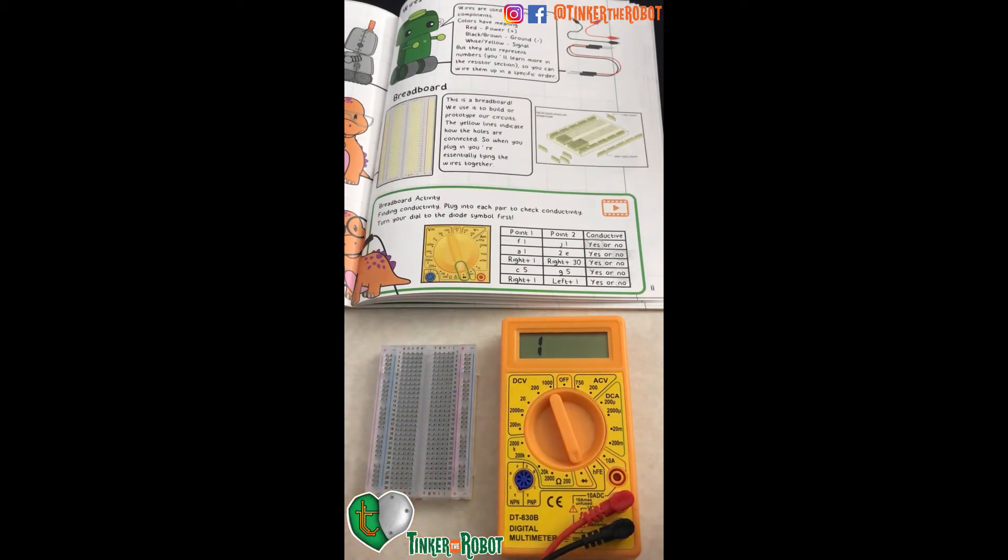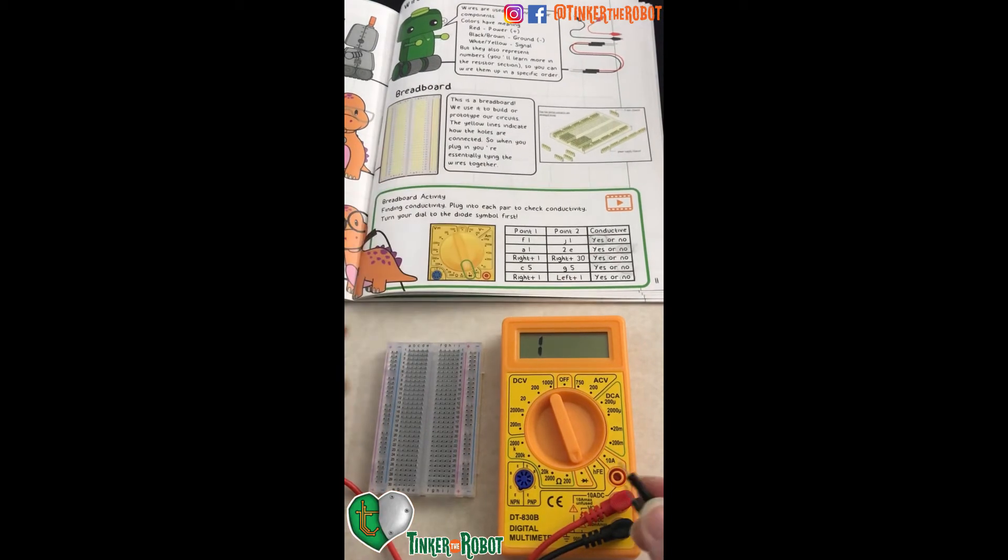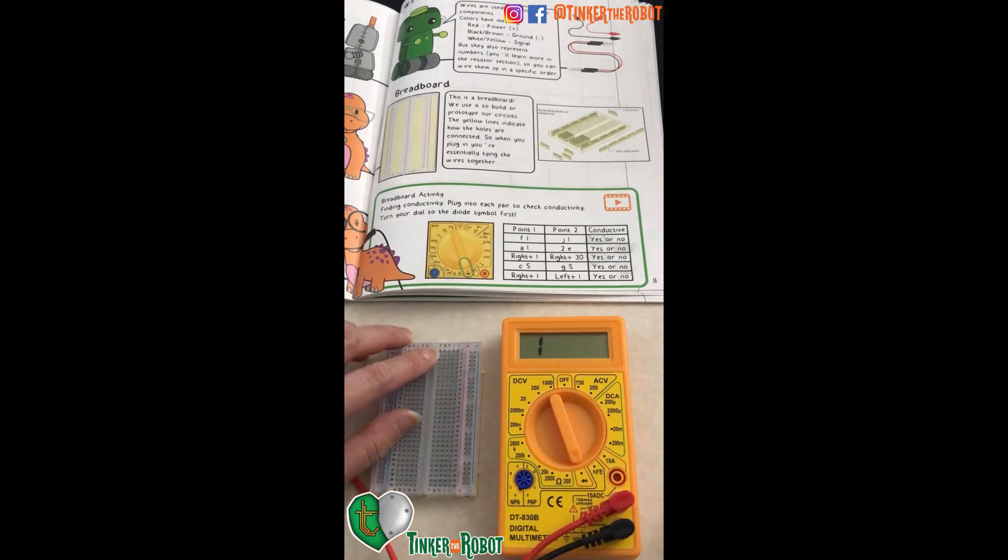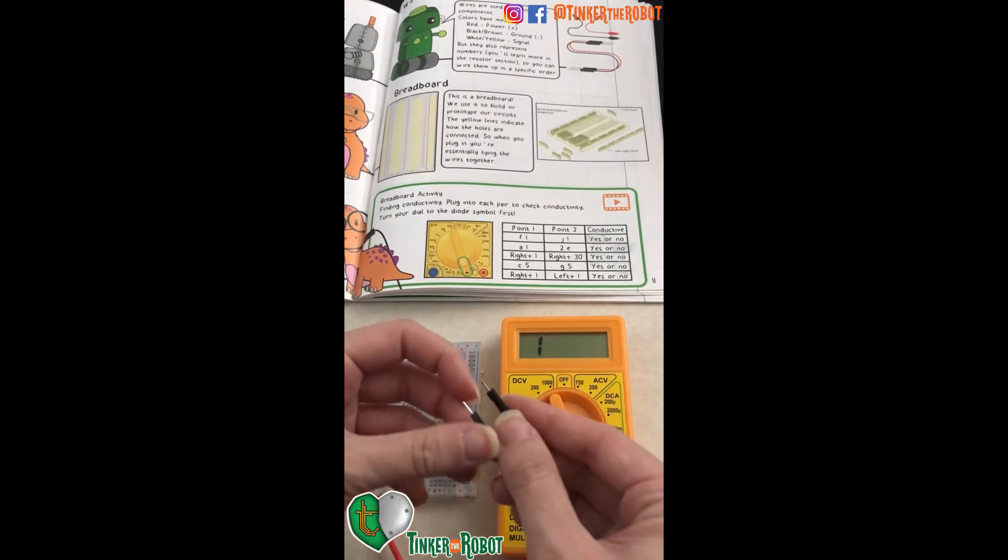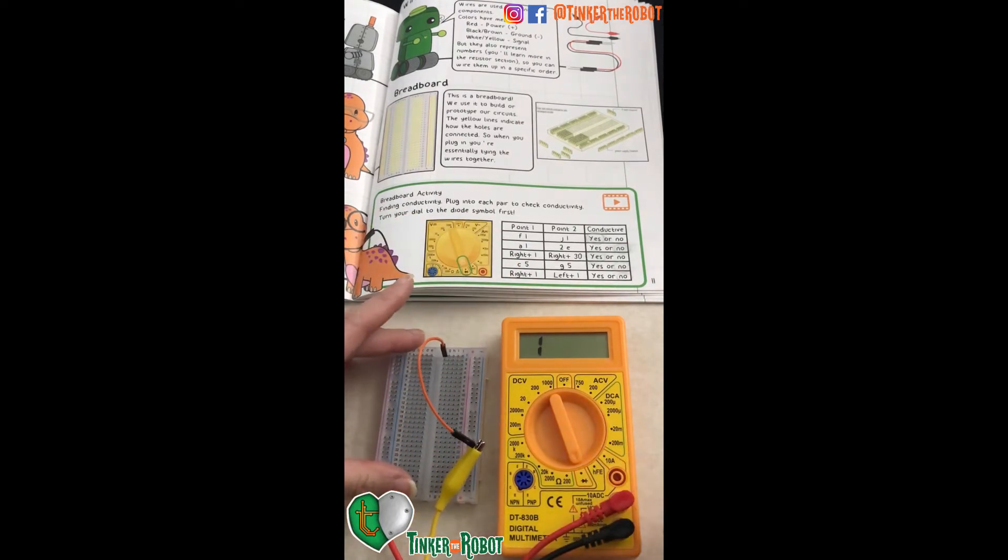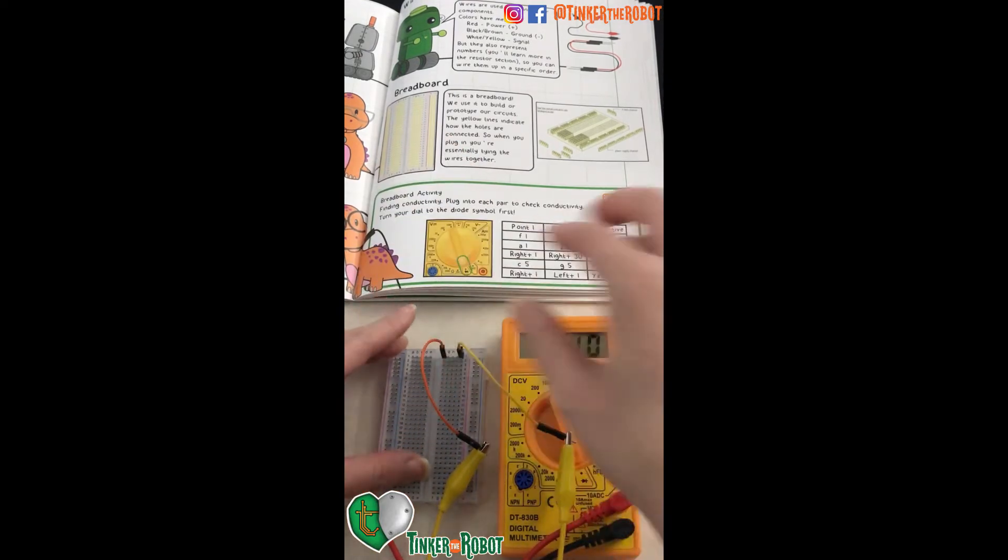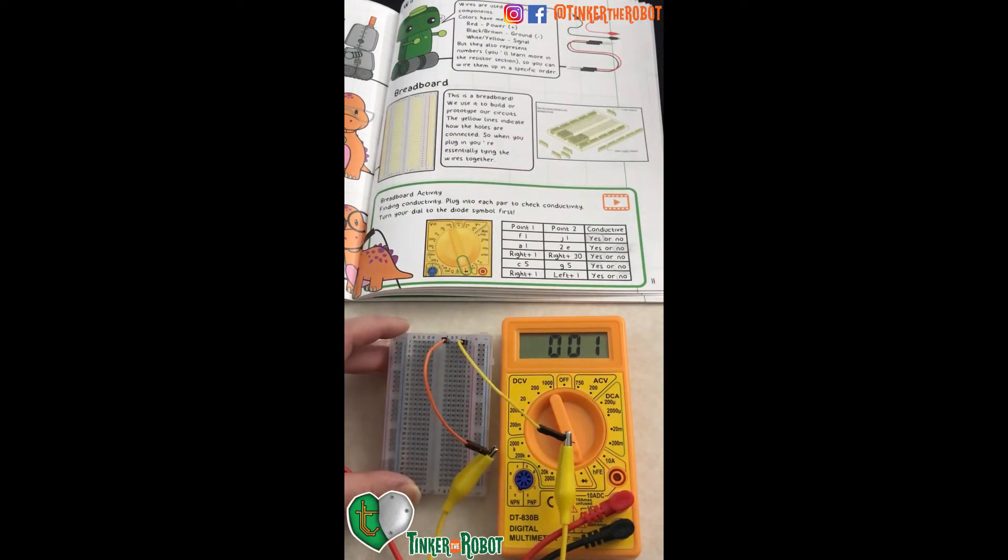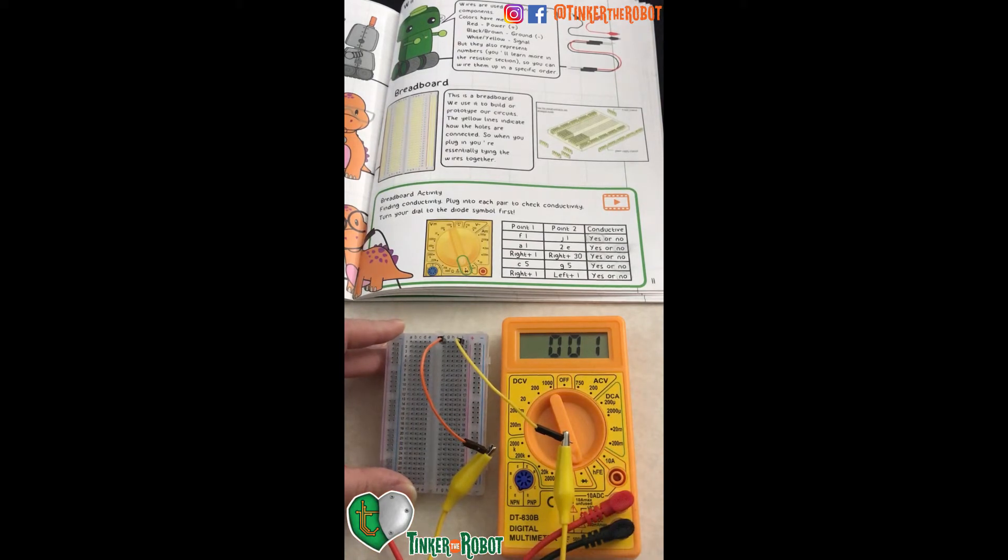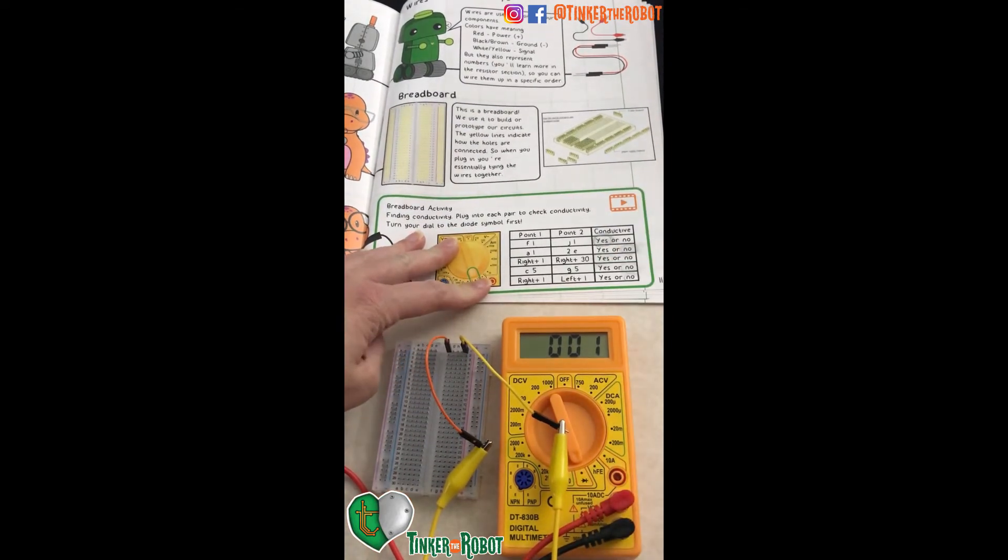So now let's go through our activity. Our first point is F1, J1. So here's F and that's the first row, so let's plug one in to F1. This is kind of like playing battleship. And then J1 right there. And see that it's plugged in and that our value is almost zero, so that means that it is a closed circuit and that those points are connected. So you can come here and indicate yes, it is conductive.